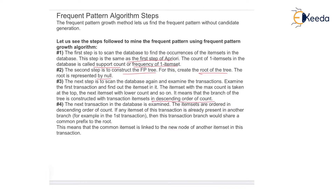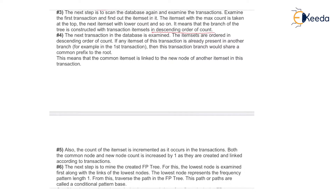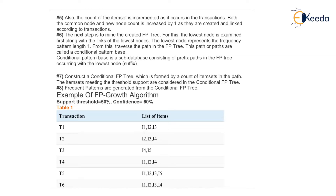In the fourth step, the next transaction in the database is examined. The item sets are ordered in descending order of count. If any item set of this transaction is already present in another branch, then this transaction branch would share the common prefix to the root. This means the common item set is linked to the new node of another item set in this transaction. The fifth step: the count of the item set is incremented as it occurs in the transaction. Both the common node and a new node count are increased by one as they are created and linked according to the transactions.